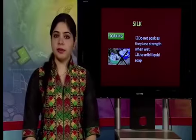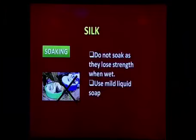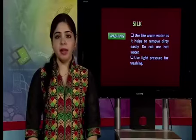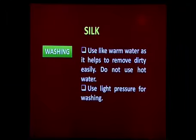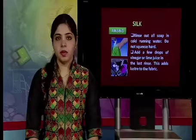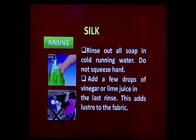For drying, white cotton can be hung outside on a clothesline, while colored cotton should be hung in a shaded area. For silk, we do not soak as silk loses its strength in water. We use mild liquid soaps for silk fabric. Washing can be done with warm water as it helps remove dirt easily — do not use hot water, and use light pressure for washing.